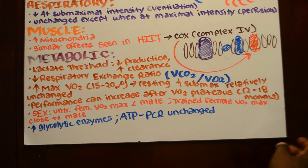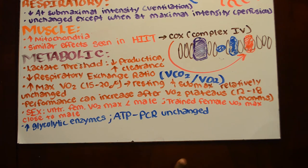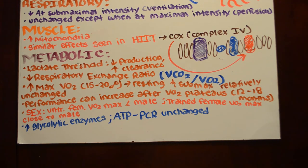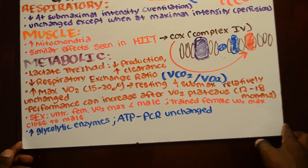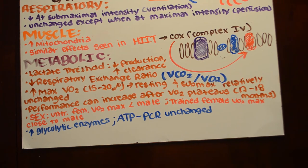Regarding sex differences: untrained females generally have a lower VO₂ max compared to males. However, trained females have a VO₂ max that is pretty close to what males can achieve. Basically, women starting off don't have the same VO₂ max capacities on average as men, but when trained, women can run just as far, just as hard, and just as long as any man.